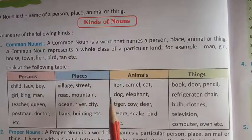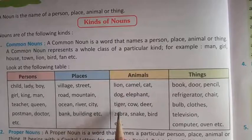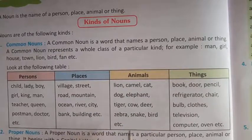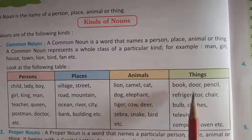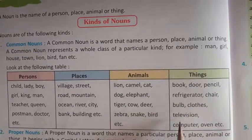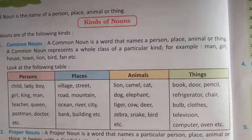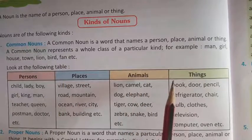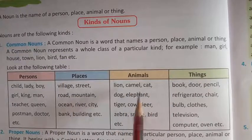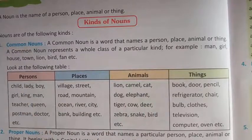Then animals: lion, camel, cat, dog, elephant, tiger, cow, deer, zebra, snake, bird, etc. Last, things: book, door, pencil, refrigerator, chair, lodge, television, computer, oven, etc. तो यह सब Common Noun है, जो एक particular kind की whole class को represent करता है. इसलिए हम इसे Common Noun कहते हैं.